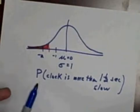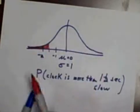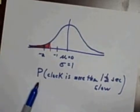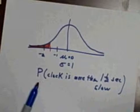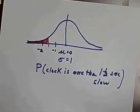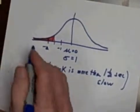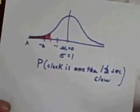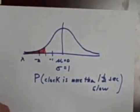Another way of stating this is: what percent of all my clocks are more than one and a half seconds slow? These are x values. The first thing we need to do is convert.